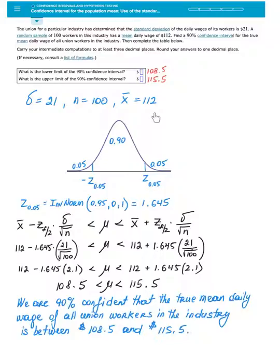To construct an interval, I need to find critical values first that will correspond to the confidence level we want. We work with a 90% confidence interval, so 90% of data has to be in the center between two critical values, negative Z and positive Z, which are symmetric about the mean.